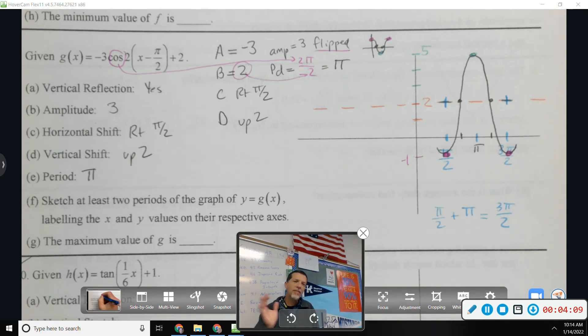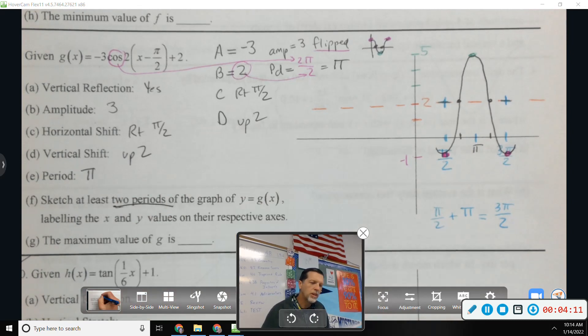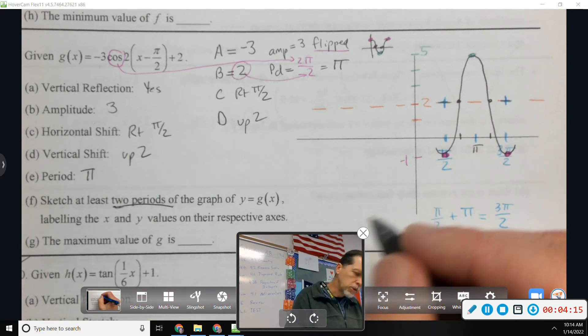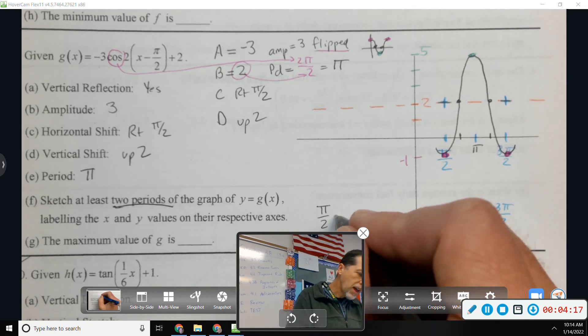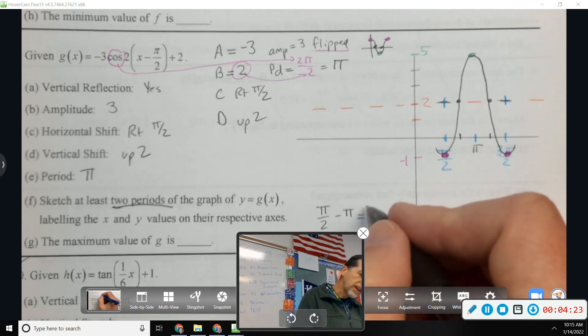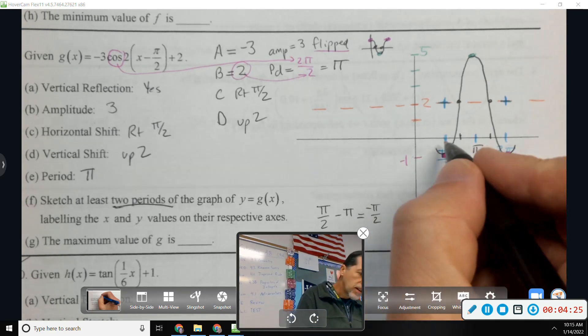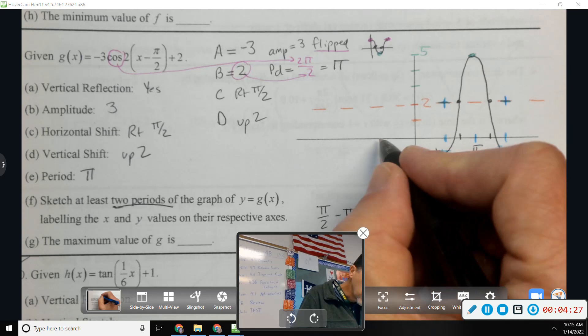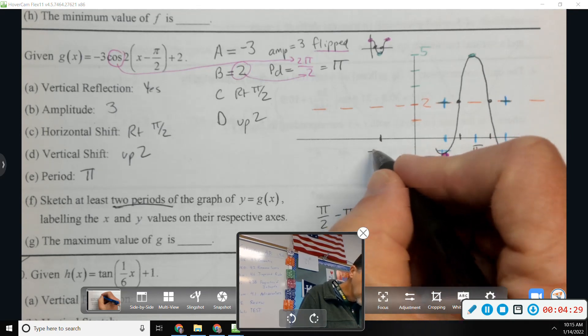I also want to sketch at least two periods. So I need to back up and graph another period. If I start at pi over 2 and go backwards pi, where does that land me? Negative pi over 2. So if this distance was pi over 2, then maybe about right there is negative pi over 2.